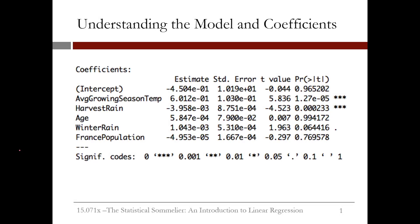In the previous video, we created linear regression models in R. Using the summary function, we were able to see the coefficients as well as some other information. The output of the coefficient section of the summary function is shown here. The independent variables are listed on the left. The estimate column gives the coefficients for the intercept and for each of the independent variables in our model.